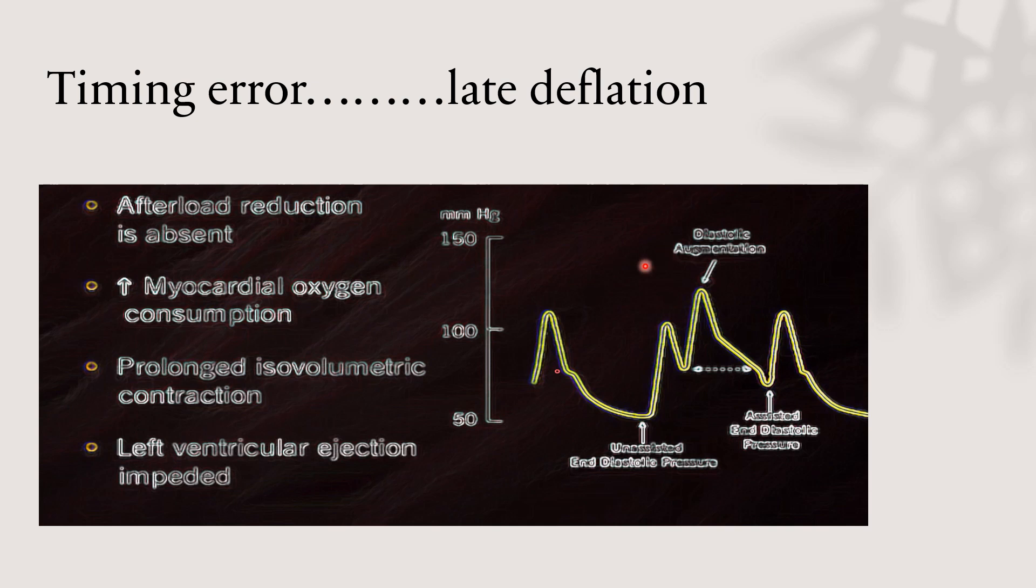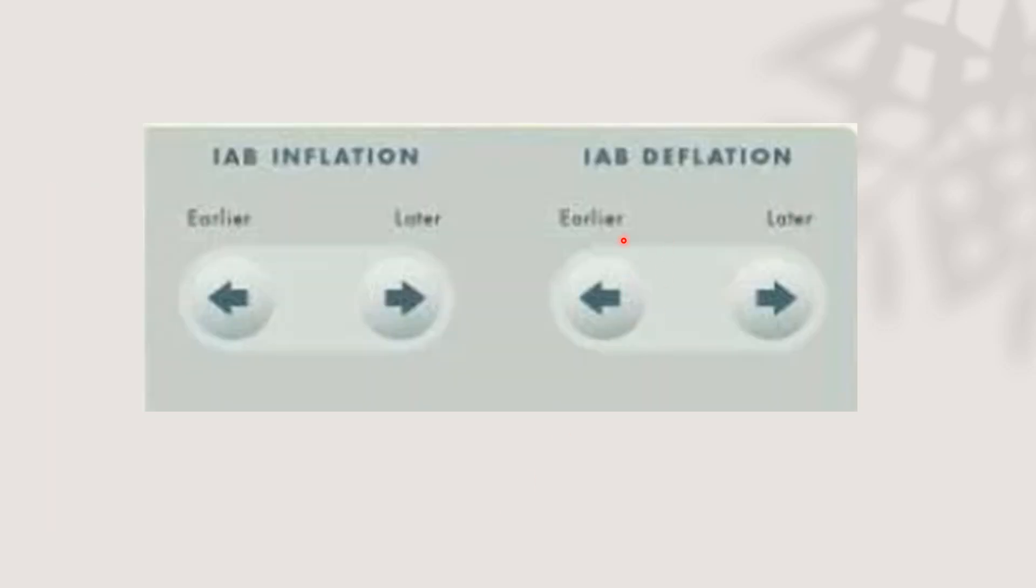If there is late deflation, afterload reduction will be absent. The balloon is still inflated, and that will increase myocardial oxygen consumption. The high pressure inside the aorta will delay the opening of the aortic valve, leading to prolongation of isovolumetric contraction, and that will affect left ventricular ejection. To solve this issue, we will press on earlier deflation till we get the proper shape of the curve.